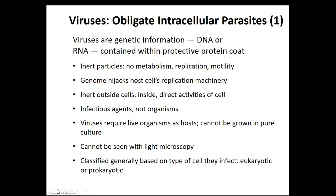We don't typically refer to viruses as organisms — we consider them to be non-living. Because of this, we usually refer to them as acellular infectious agents. They do require living organisms in order to replicate. You can't grow them in a pure culture because there will always be another cell type present. Viruses are some of the smallest microbes we have, meaning they can't be seen with a light microscope. Although there are many ways to classify viruses, many are classified based upon what type of cell they infect — eukaryotic or prokaryotic cells.